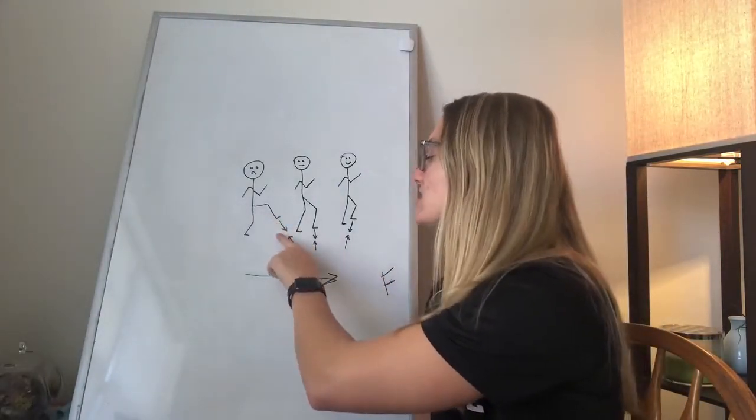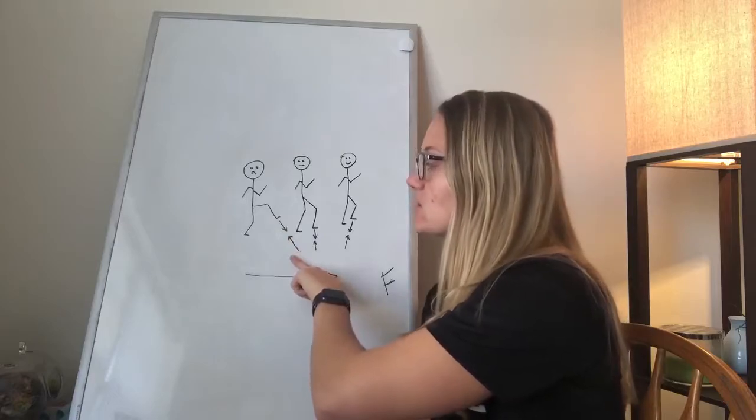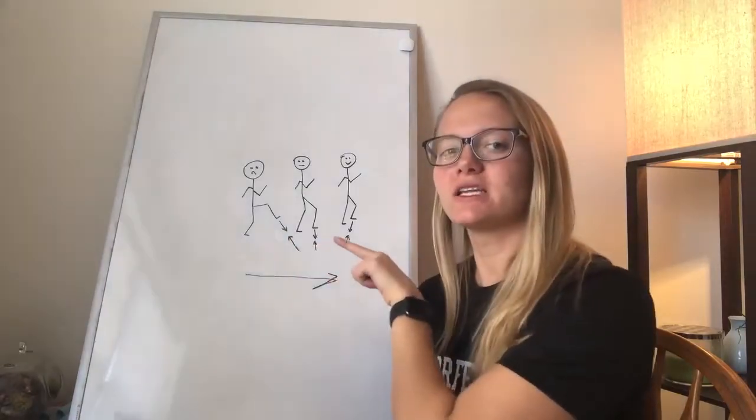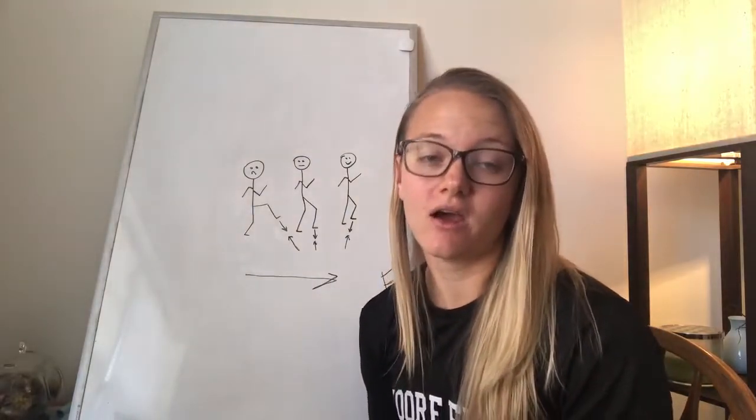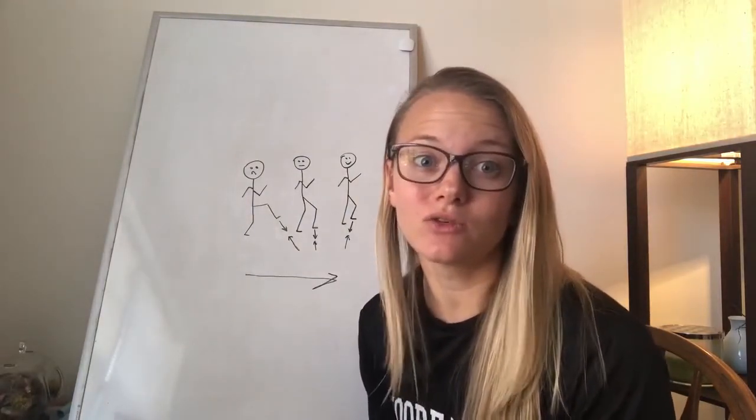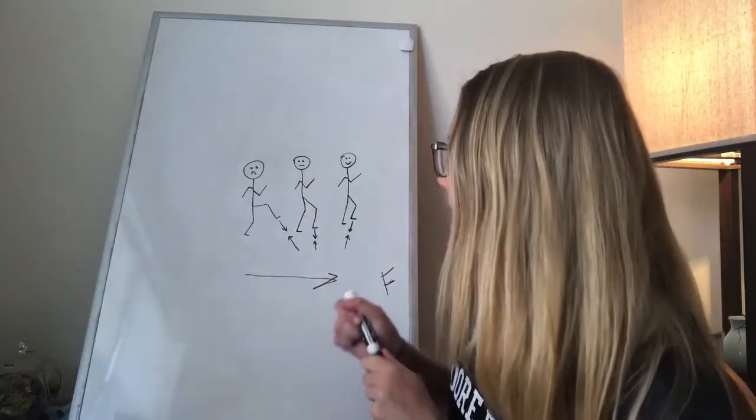So this guy, when he puts his foot down, the force from the ground is actually forcing him back towards the starting line. So the first death of overstriding is it slows you down.